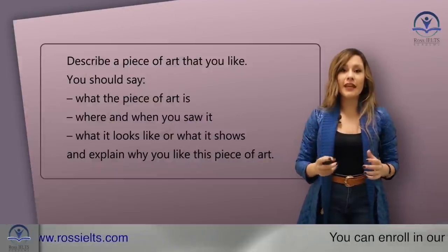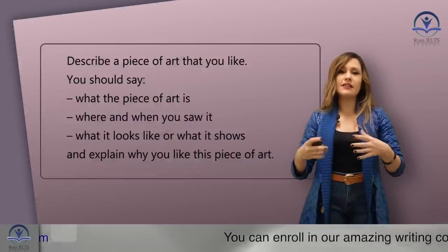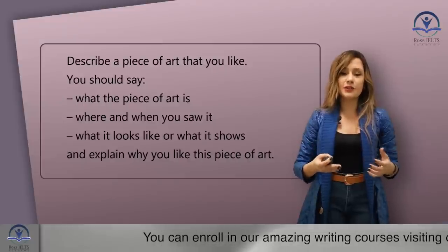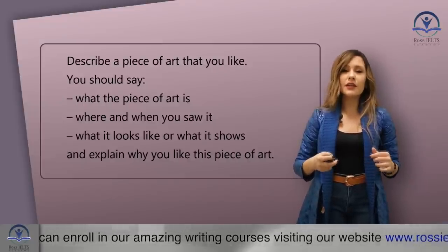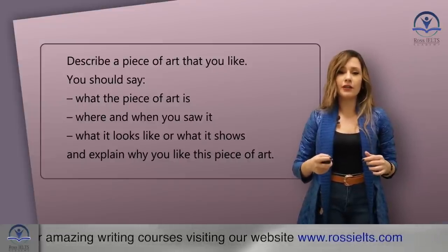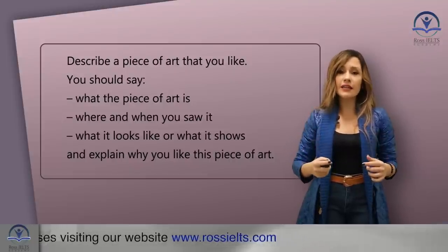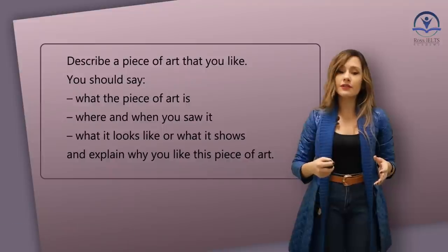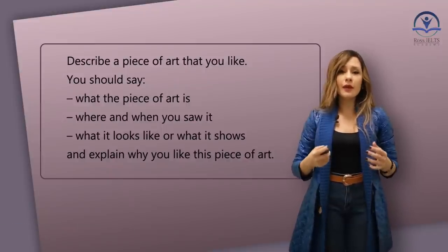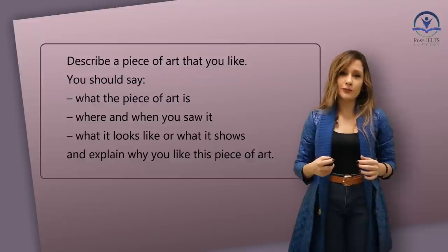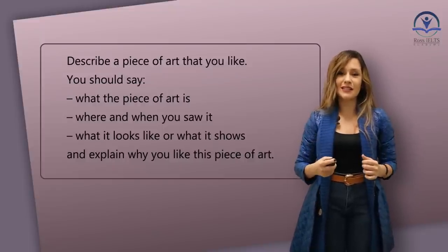Now let's look at our cue card again. I want to use these words and give a simple but correct answer. The cue card was: Describe a piece of art that you like. You should say what the piece of art is, where and when you saw it, what it looks like or what it shows, and explain why you like this piece of art. Let's see how I answer this.